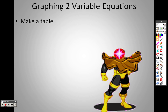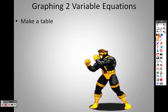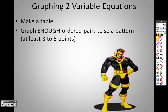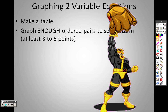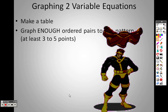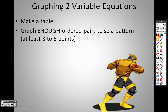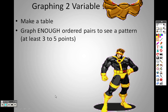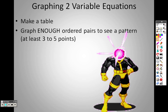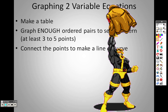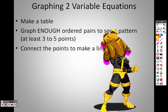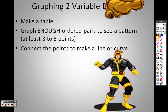So, graphing two-variable equations. First thing is, you can always make a table — a table of values. Make sure in your table that you graph enough ordered pairs to see a pattern, roughly three to five points. You want to connect all the points to make a line or a curve.